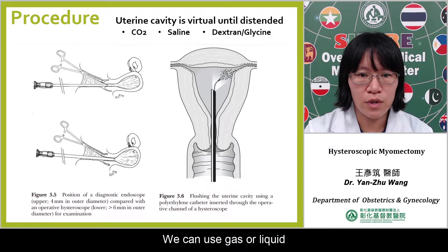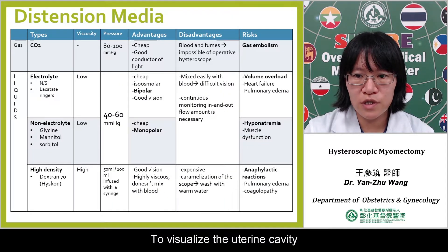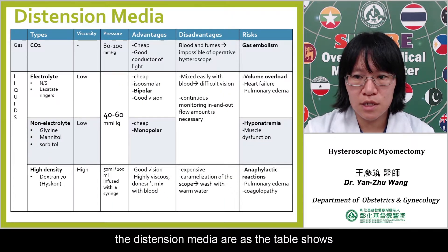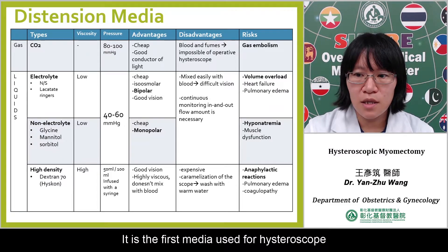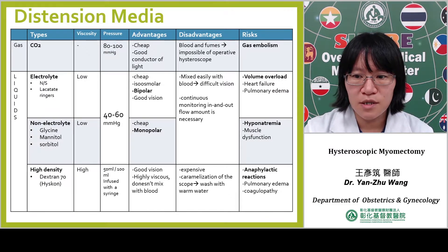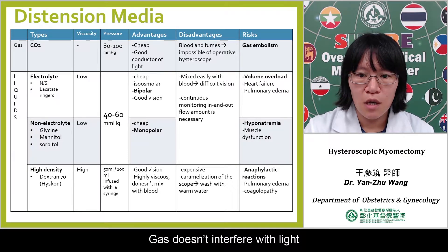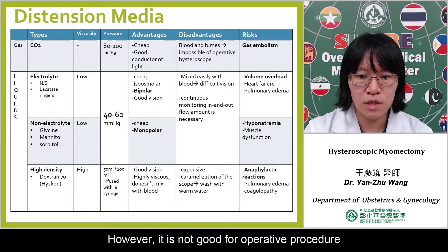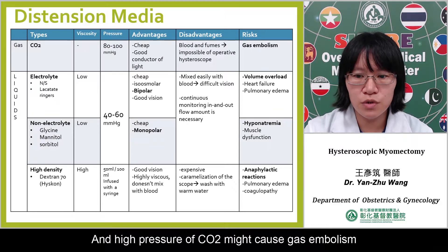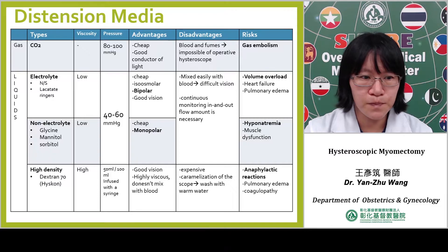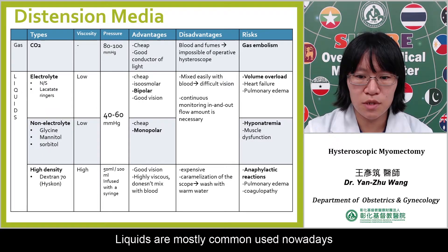We can use gas or liquid. For gas, we can choose carbon dioxide — it is the first media used for hysteroscopy. Gas doesn't interfere with light, so it has the best vision. However, it is not good for operative procedures because blood or fumes might obscure our vision. And high pressure of carbon dioxide might cause gas embolism. Liquids are most commonly used nowadays.